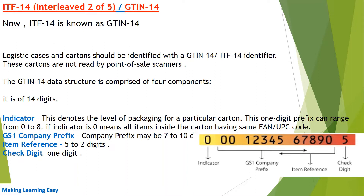These cartons are not read by the point of sale scanners. The point of sale scanner is used to read the retail item which the customer buys. Now let's see the structure of GTIN-14. It is 14 digits and has four parts. The first is the indicator, which is a single digit.